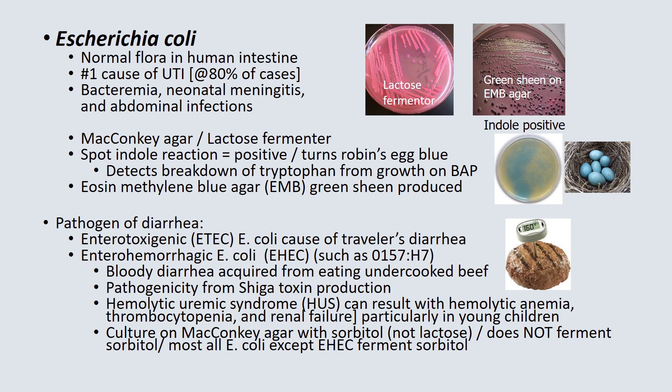E. coli grows very well on MacConkey agar as a lactose fermenter, producing pink-colored colonies. It can also be grown on EMB (eosin-methylene blue) agar, producing a green sheen. One of the most identifiable reactions for E. coli is a spot indole reaction — when performed, it turns robin's egg blue. This is done from organisms growing on blood agar, which contains tryptophan, because indole is a breakdown product of tryptophan.